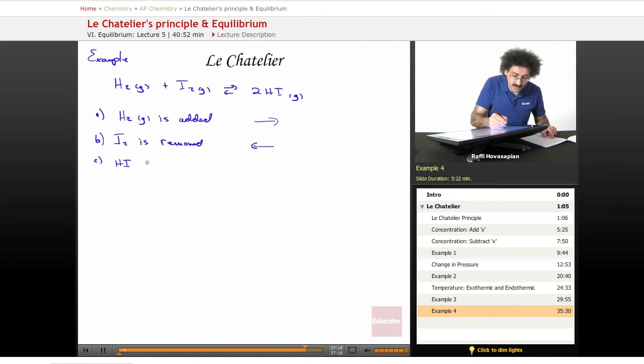C, HI is removed. Well, if I remove hydrogen iodide, the system is going to want to offset by creating more hydrogen iodide. How do you create more iodide? You shift the reaction to the right.